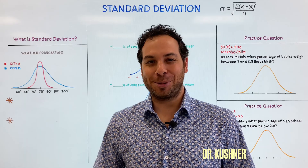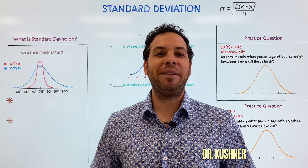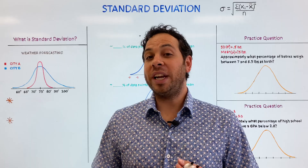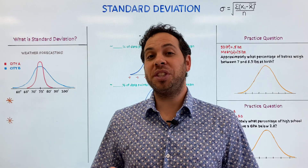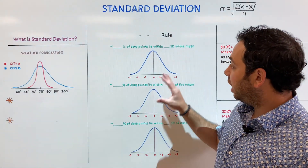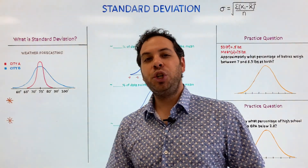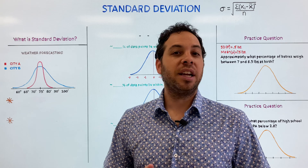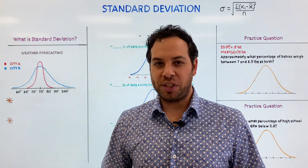Alright guys, welcome to Psych Explained. In this video we're going to dive into standard deviation. Specifically, what is standard deviation? And also, how can we use this measurement to help explain what's happening in a normal distribution curve? And we're going to do that using a memory technique known as the 68-95-99.7 rule.